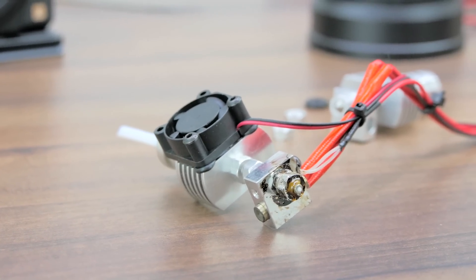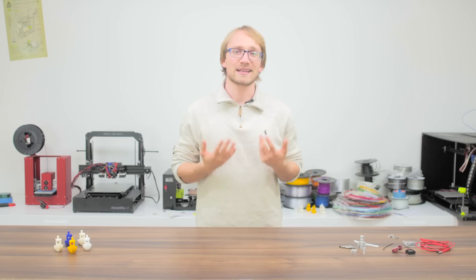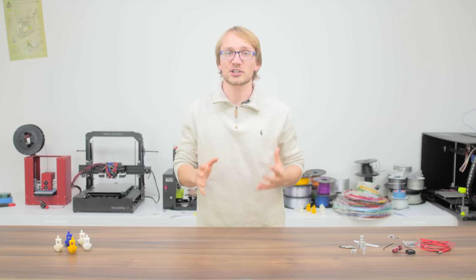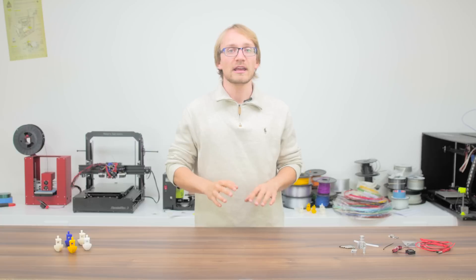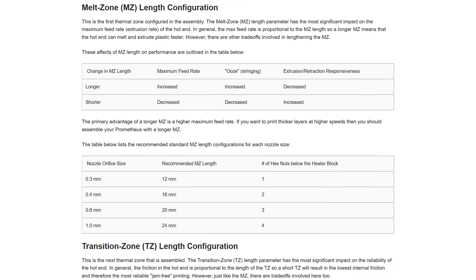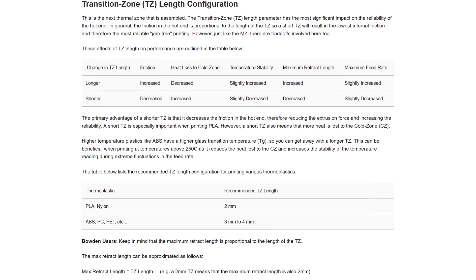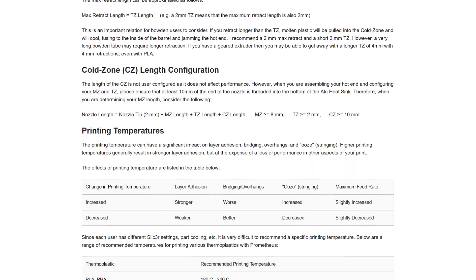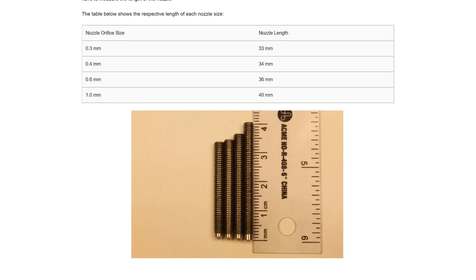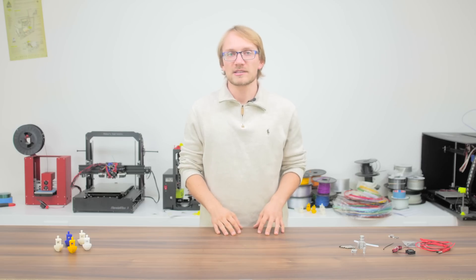But of course, what use would all that machining goodness be if the actual thing didn't work? Well, okay, first off, it is of course hard to judge a performance of something that is practically indefinitely configurable, but thankfully, there are a few suggested layouts available online. I picked one that is midway in between what's recommended for PLA and ABS, since I planned on using both of those and many more plastics, and that meant, again, basically configuring as an E3D V6.